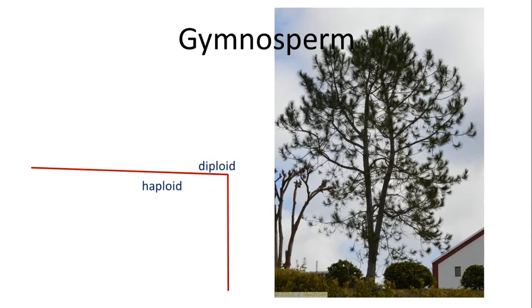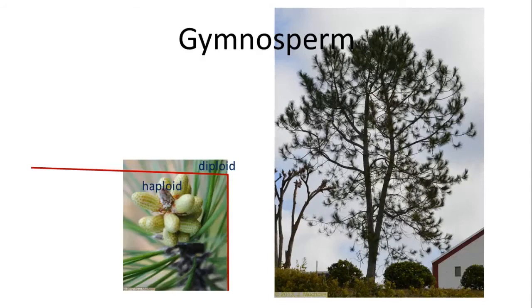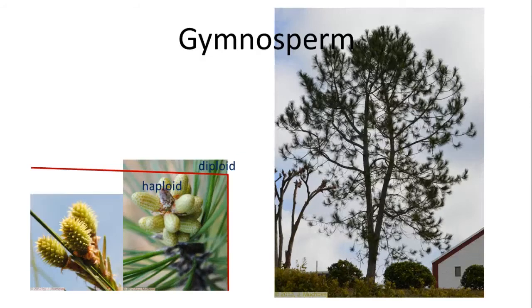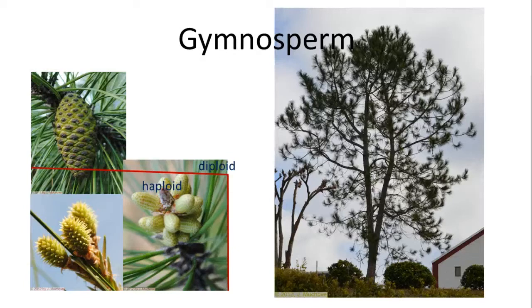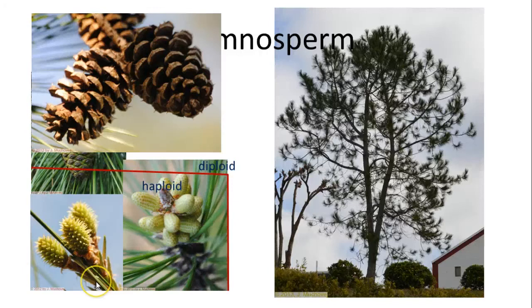We're going to look at the gymnosperms, starting with a pine tree as a typical example. The pine tree is diploid, being the result of a seed germinating. At some point during its life cycle it produces gametes — this is the male gamete cone and this is the female gamete cone of a pine tree. The male gamete passes pollen onto the female gamete, fertilizing the egg, and out of that you get a fertilized cone, which is diploid in nature.